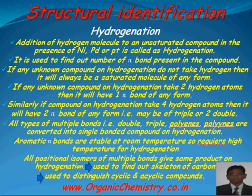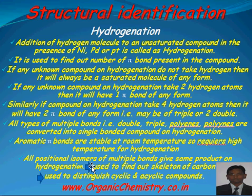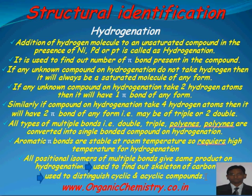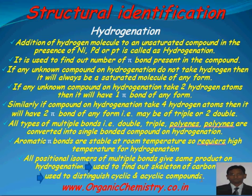Hydrogenation is used to find out the carbon skeleton. For example, if a compound C4H8 on hydrogenation gives C4H10 (butane), the main carbon skeleton is a straight chain, and the positional double bond may be at C1 or C2. Hydrogenation is also used to distinguish cyclic and acyclic compounds. If C4H8 on hydrogenation gives C4H10, it means one hydrogen molecule was added, so C4H8 has one multiple bond. But if C4H8 on hydrogenation gives no reaction, it is surely cyclic — it may be cyclobutane or methylcyclopropane.